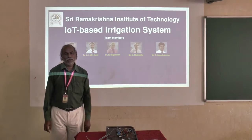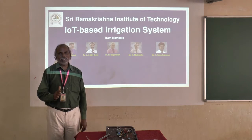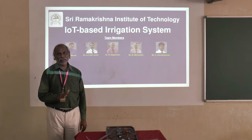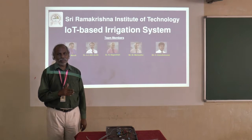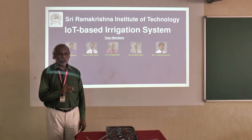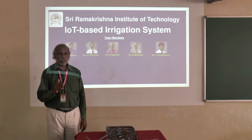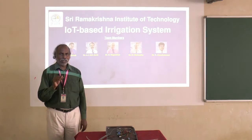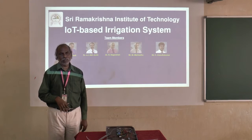Good morning to all. Our problem statement is to optimize the water consumption in agriculture. Over-consumption as well as insufficient water usage is a major problem. So in our project, we try to avoid these two problems. By using this IoT-based technology — the IoT-based irrigation system — we can optimize and use only a limited amount of water, thus saving water for people.